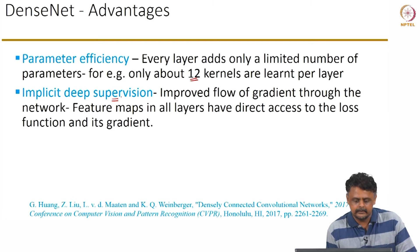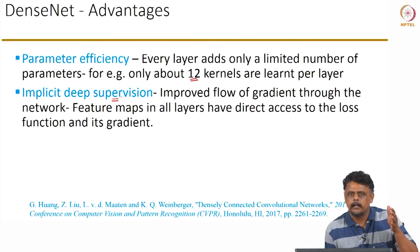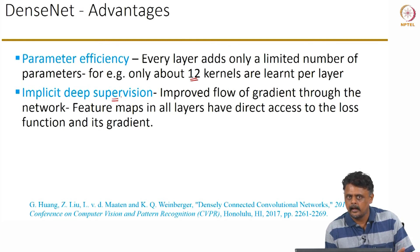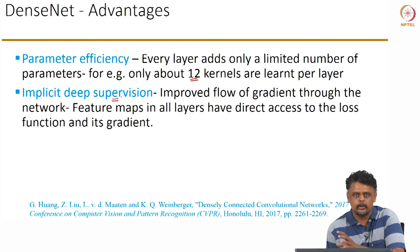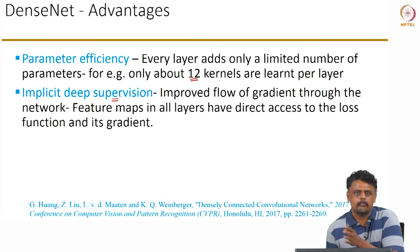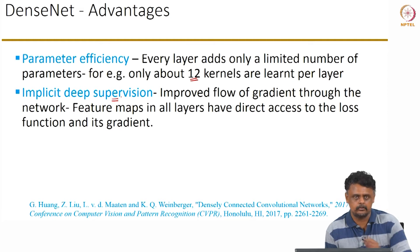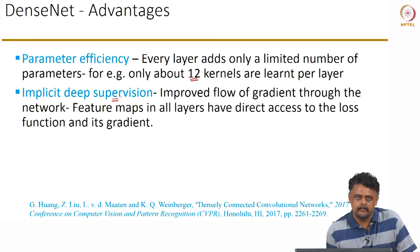In DenseNets, as feature maps are concatenated from preceding layers, the activations from earlier layers have direct access to the error or cost function. Although layers are grouped into dense blocks and separated from the error function by a couple of dense blocks, the feature maps still have relatively direct access to the error function, thereby improving training and learning of discriminative features.